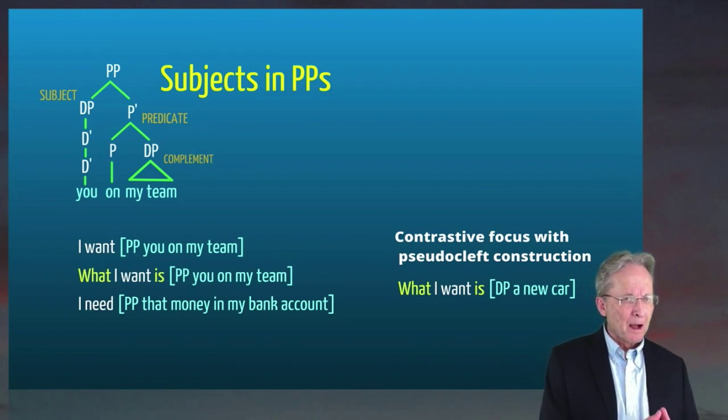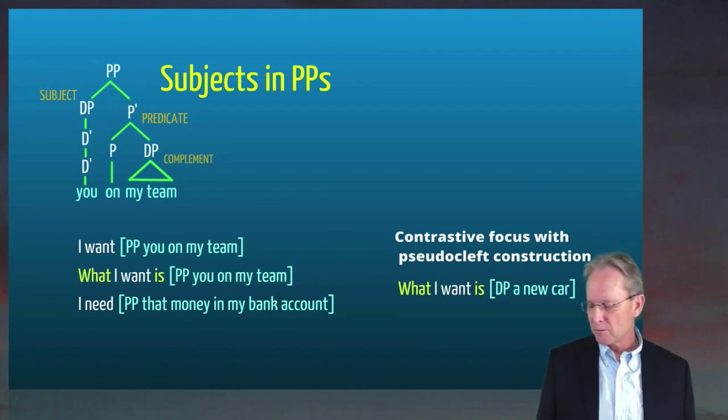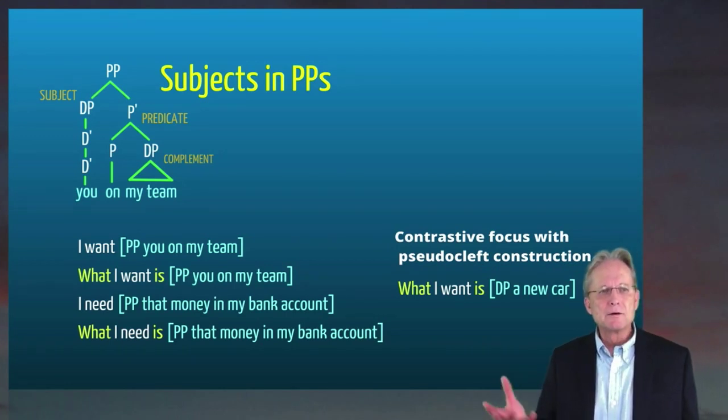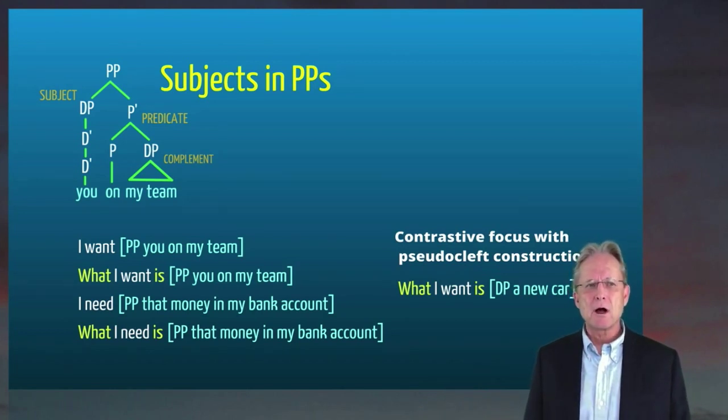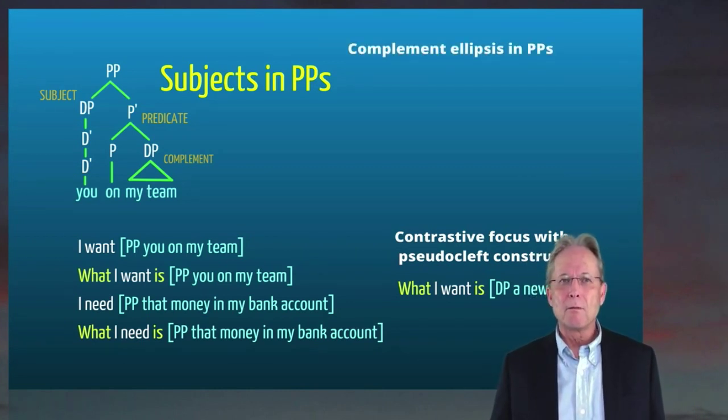Similarly with, I need that money in my bank account. In my bank account, we have the same kind of a structure, need has as its complement, a PP. And that PP has within it, both the head preposition in, and the two objects that are being specified as being in the in relationship. My bank account is the place, the stuff that is in that place is that money. So I need that money in my bank account. And I can say what I need is that money in my bank account. Why? Because that money in my bank account is a phrasal constituent, the complement of need. But it's not a DP. It's a prepositional phrase from all we can tell.